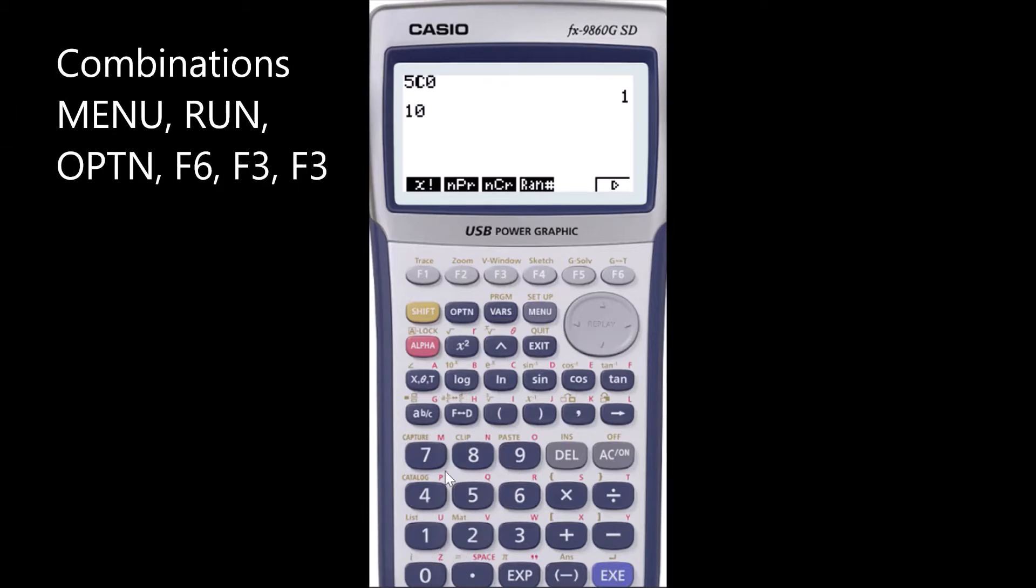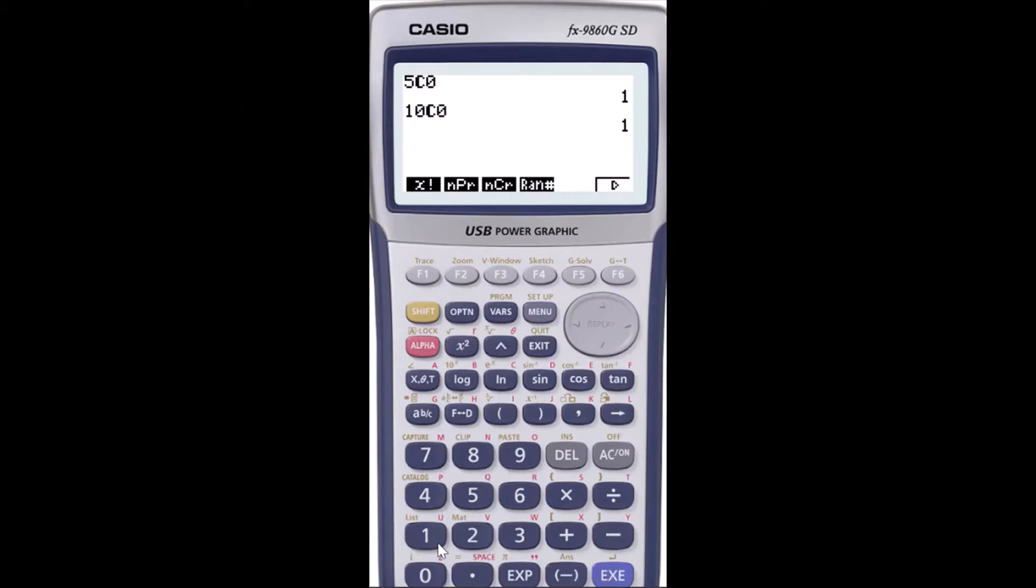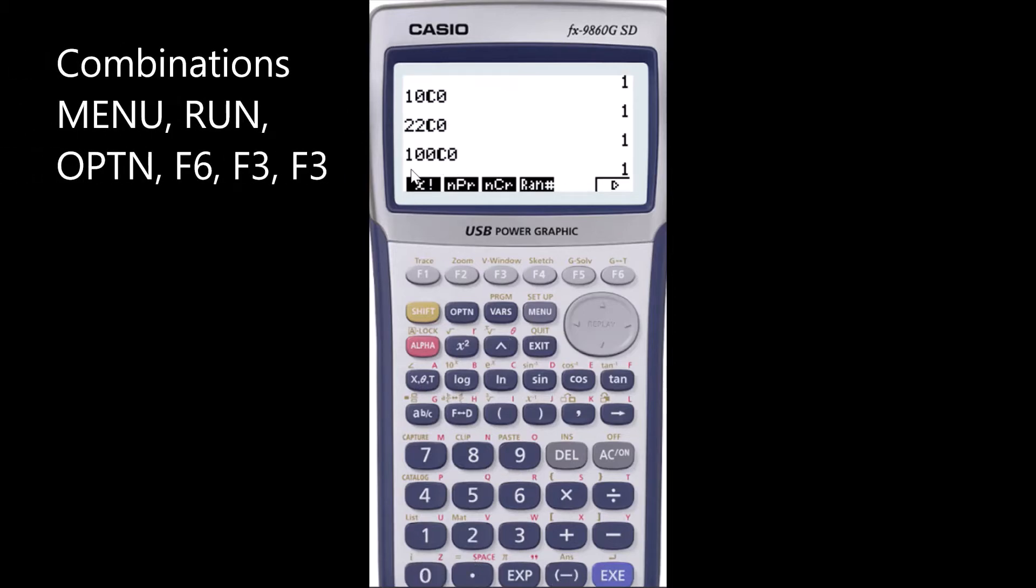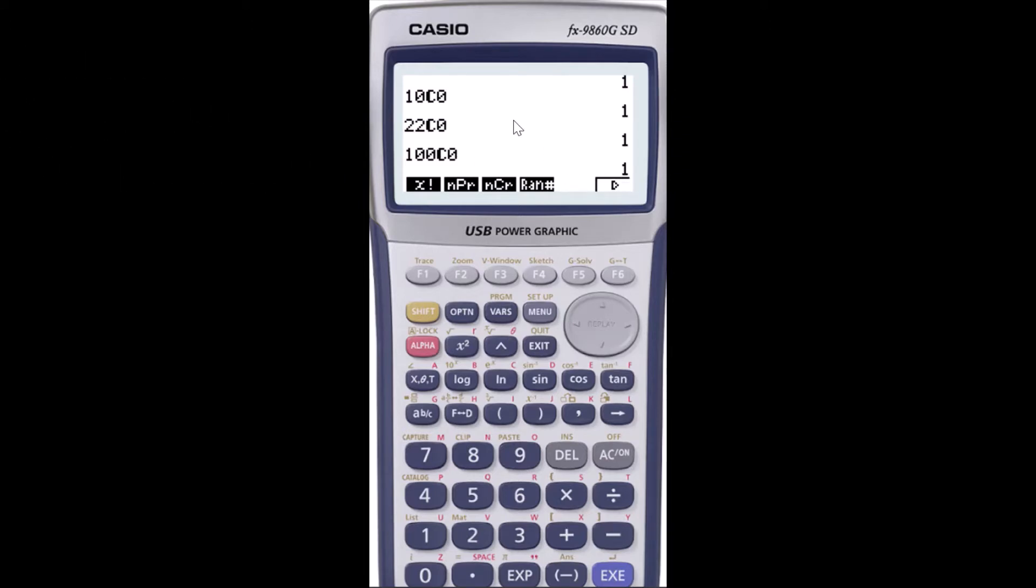Likewise if we go 10 combination 0, is also 1. So in general if I go nC0 it will also be 1, or we can use a combination formula and you'll see that the combination will always be 1. So there's only one way of selecting zero from n number of trials.